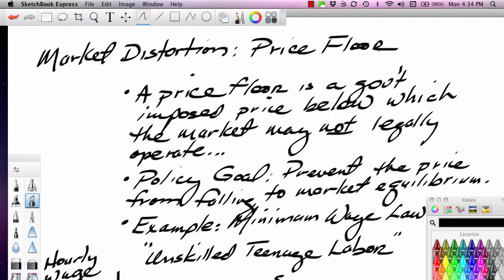We're taking a look at a price floor. A price floor is a government-imposed price below which the market may not legally operate. In other words, the government is actually trying to prevent the price from falling to market equilibrium. The intent here is to keep prices artificially high. Clearly, government is trying to benefit the producer in this case.